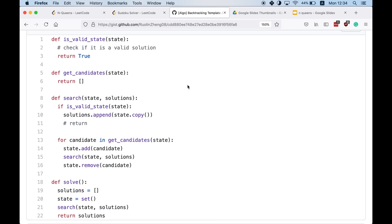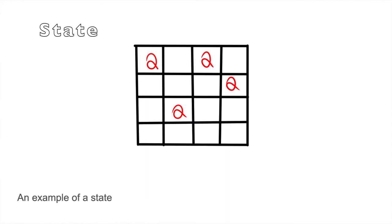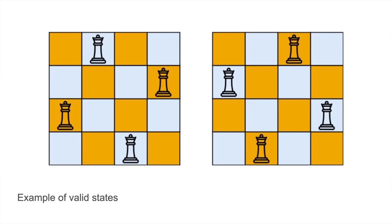Let's start with some keywords and concepts in backtracking problems that will help us understand the template better. The first keyword is 'state.' Essentially, a backtracking problem is asking you to find valid states. Take the N-Queens example: a state is arbitrarily placing N queens on an N-by-N board. A valid state requires that the queens are placed in a way that they cannot attack each other.